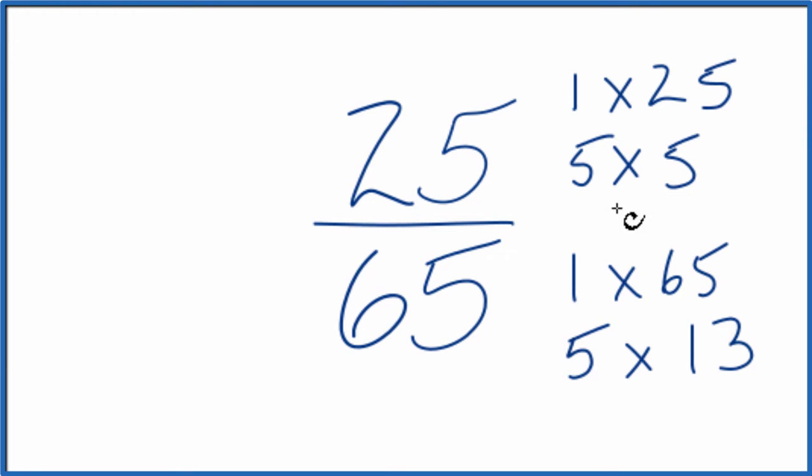And it looks like the greatest common factor is 5. So we divide 25 by 5 and then 65 by 5. And we'll have simplified 25 65ths.